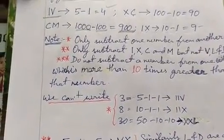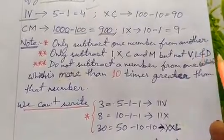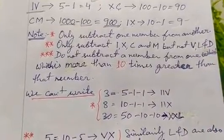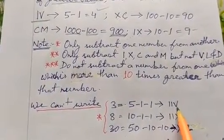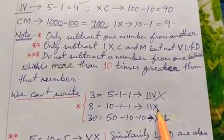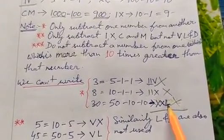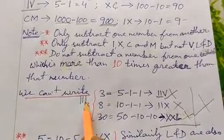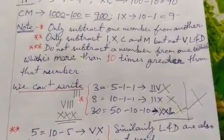When subtracting, some additional rules must be kept in mind. Sub-rule 1: only subtract one number from another — only 1 digit can be subtracted, not more than one. For example, from 5 we subtract 1 to get 4. We cannot write IIV; subtracting 2 is wrong. We also cannot subtract II from X, or subtract two X's from 50 to get 30 — these are wrong. For 3, write III. For 8, write V plus III. For 30, write XXX.